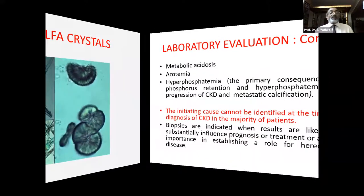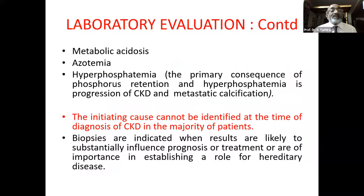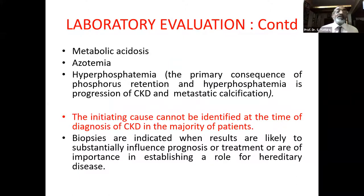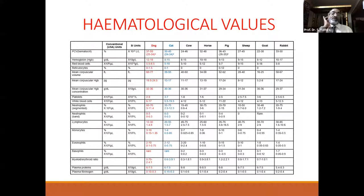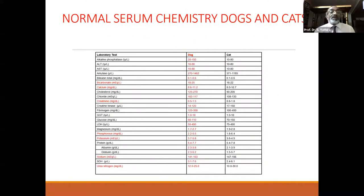New strategies: serum creatinine is considered an insensitive marker for mild renal destruction. Cystatin C is better and rises much earlier than creatinine in renal disease, but cannot be done in every laboratory. For us, the best thing is to go for urine biomarkers — quantitation of these may provide information on early renal damage. Blood biomarkers also help in early detection.